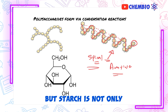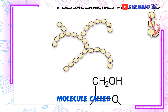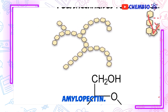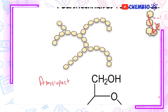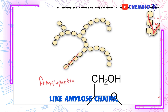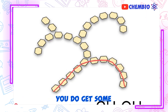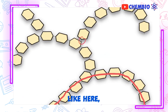But starch is not only amylose, because starch also contains another type of molecule called amylopectin. Amylopectin is made up of chains that are more or less like amylose — they're linear — but every now and then you do get some branches, like here, here, here.